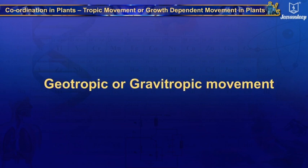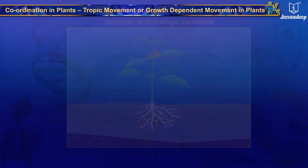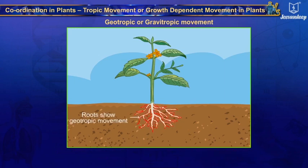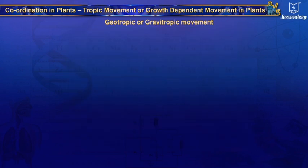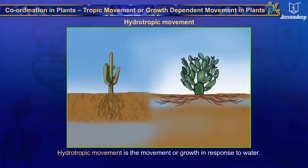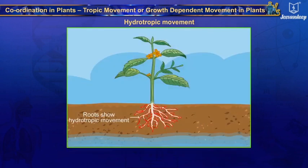Geotropic or gravitropic movement is the movement or growth in response to gravity. The roots of plants show geotropic movement as they grow in the direction of the gravitational pull. Hydrotropic movement is the movement or growth in response to water. The roots of plants show hydrotropic movement and always bend towards water.